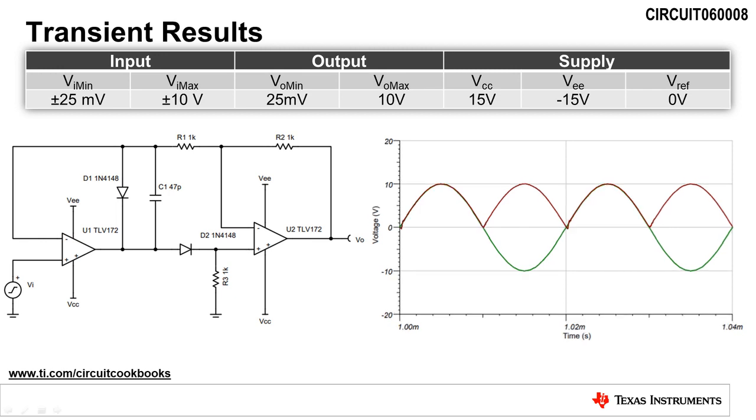A transient analysis of this circuit with a 50 kilohertz plus minus 10 volt sinusoidal input signal yields a rectified output signal with a peak amplitude of 10 volts. This verifies functionality of the circuit at maximum input.